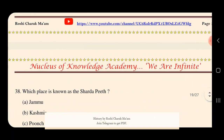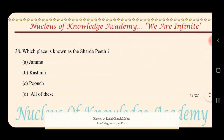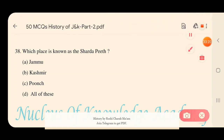Question 38: Which place is known as the Sharda Peet? Options: A) Jammu, B) Kashmir, C) Poonch, D) All of these. The answer is B — Kashmir is known as the Sharda Peet.